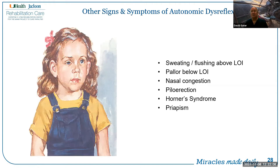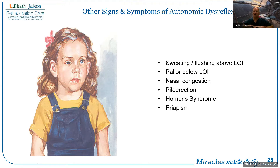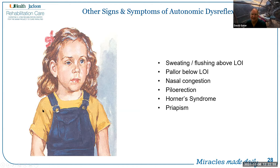Additional cardiac rhythm disturbances can occur, potentially including partial heart block. Other signs and symptoms of autonomic dysreflexia include sweating and flushing above the level of injury, with a very clear demarcation visible on someone with a high thoracic SCI — flushing and sweating above, pallor below. They may also have nasal congestion due to higher blood pressure and relative vasodilation. Piloerection on the back of the neck and arms, Horner's syndrome — ptosis, miosis, anhidrosis, and enophthalmos — and priapism can all occur in response to a noxious stimulus below the level of the injury.